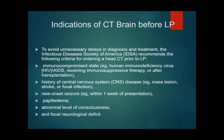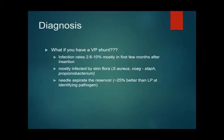If your patient has a VP shunt (ventriculoperitoneal shunt), the infection rate is 2.6–10%, mostly in the first few months after placement. These are mostly infected by skin flora — Staphylococcus aureus, coagulase-negative staph, or Propionibacterium. Needle aspiration of the shunt is diagnostically about 25% better than LP at identifying the pathogen, and this procedure is done by the neurosurgeon.